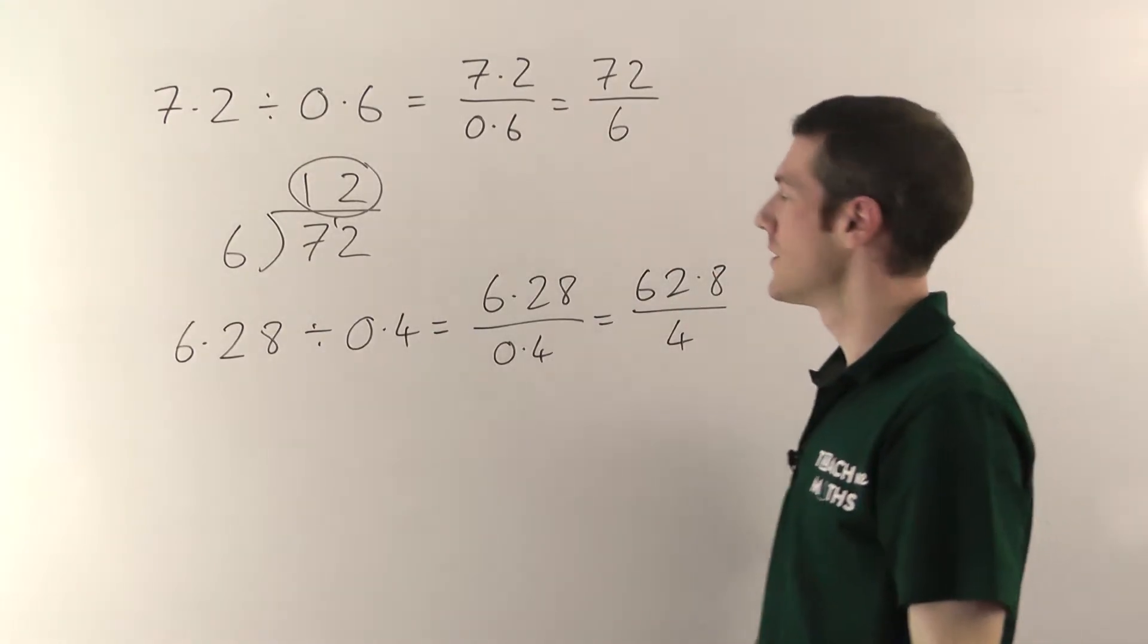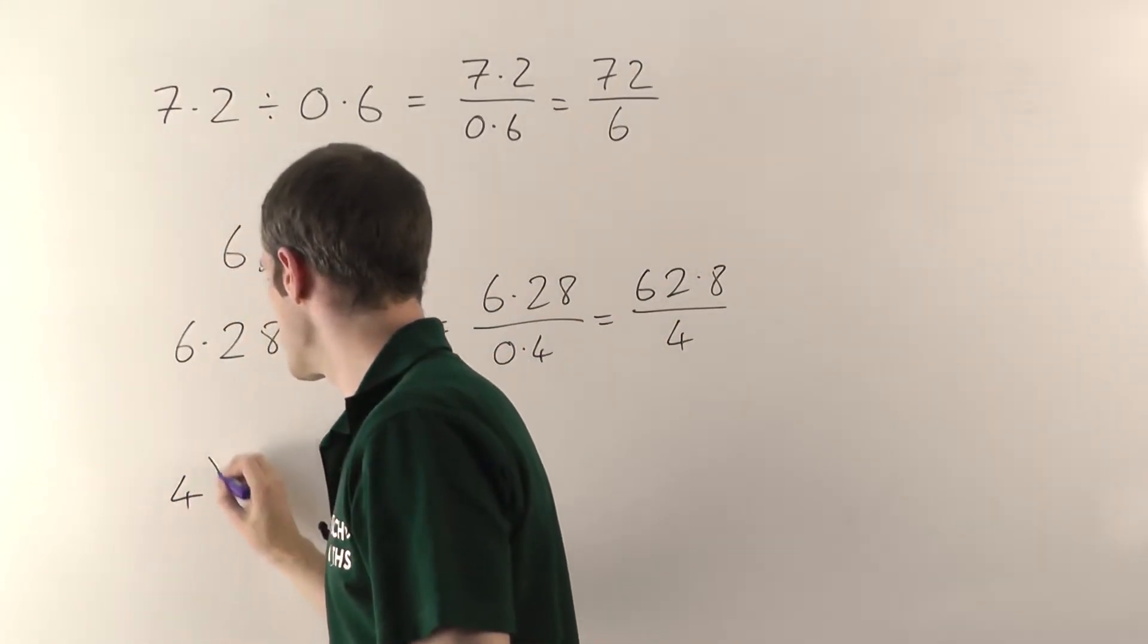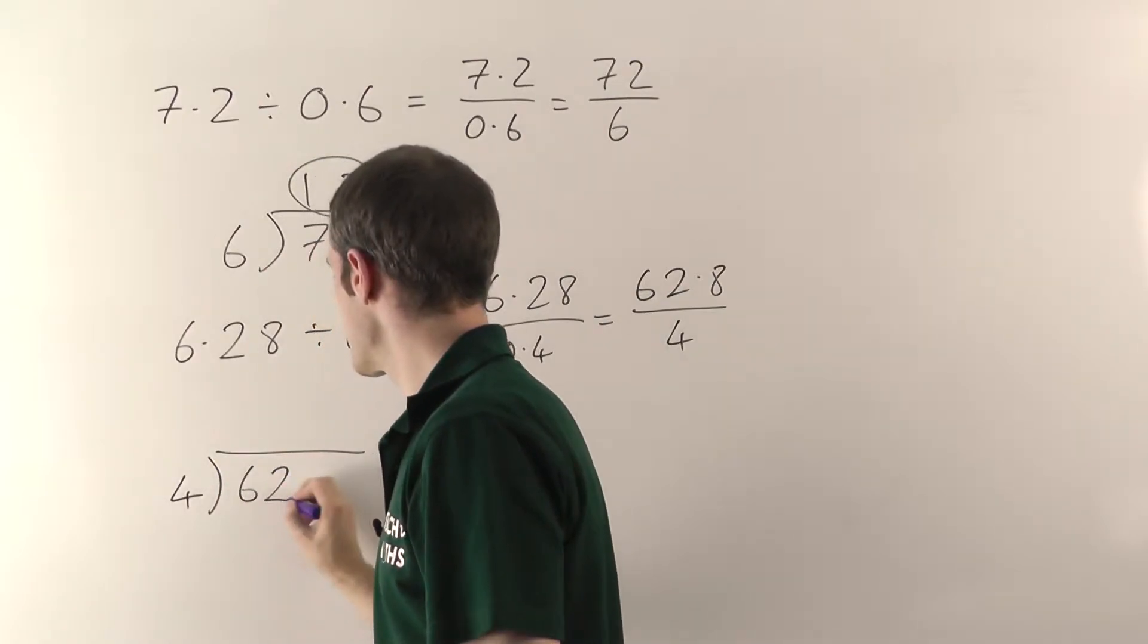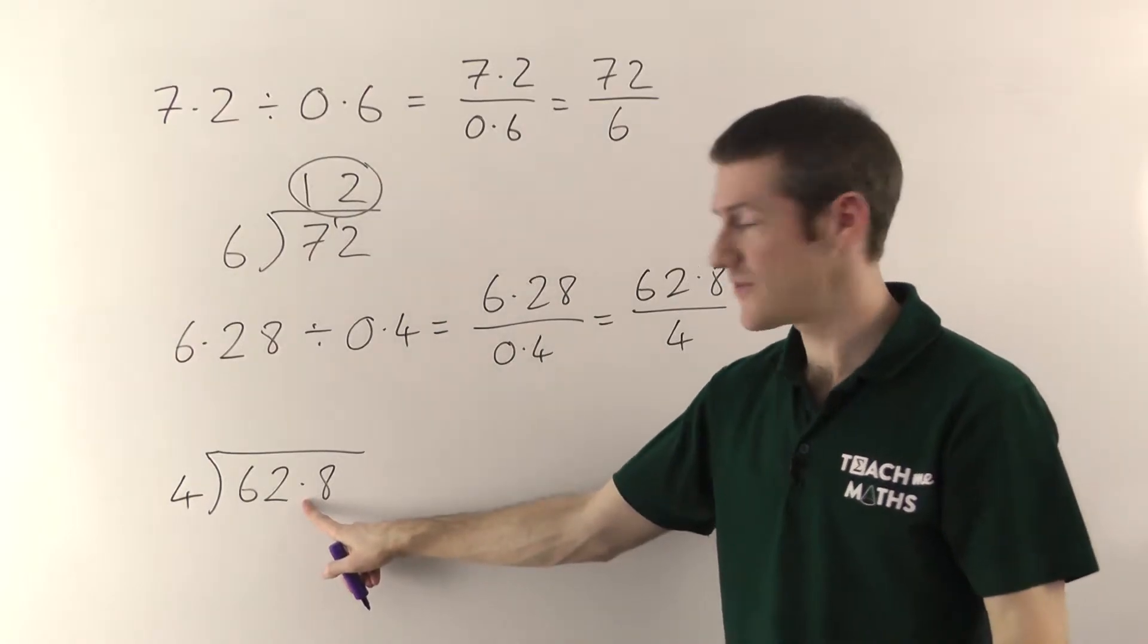Now we do the division. So it's going to be how many fours into 62.8. So again, you're going to do normal division here. 62.8. The only difference here is you've got the decimal point, but it's very easy to deal with.